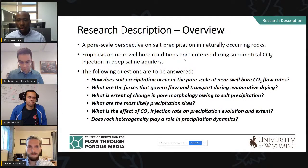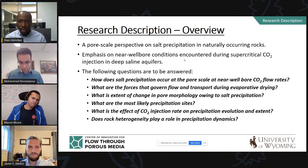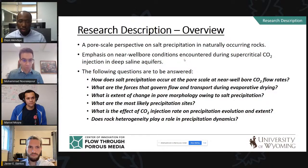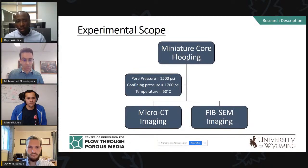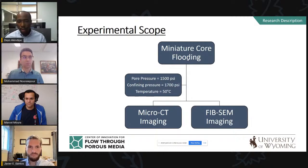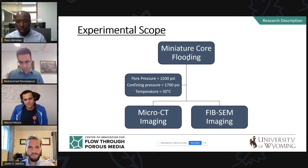We wanted to answer questions about salt precipitation in naturally occurring porous media: how does it occur, what is the extent of pore morphology change, what are the most likely precipitation sites, what is the effect of CO2 injection rate, and how does heterogeneity affect precipitation dynamics. We carried out miniature core flooding experiments, injecting fluids into small core samples as small as 5 mm in diameter, at high pressure and temperature, using micro-CT imaging and QEMSCAN imaging.